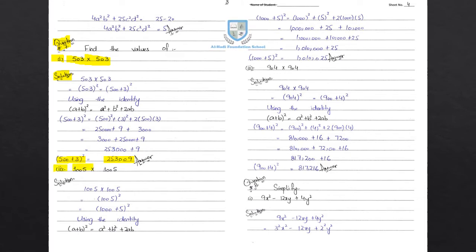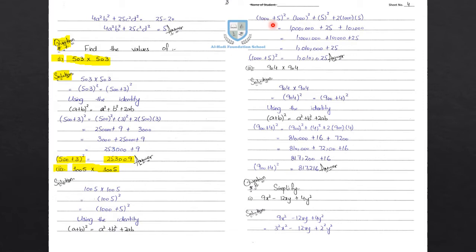Part 2: 1005 multiply 1005. Since both numbers are same, 1005 whole square. Breaking down: 1000 plus 5 whole square. Using the identity a plus b whole square equals a square plus b square plus 2ab, where a is 1000 and b is 5.